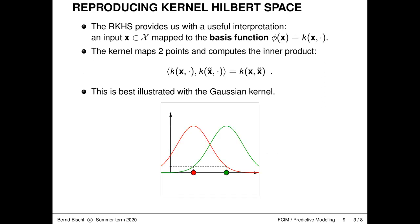The RKHS provides a very useful interpretation: an input x is mapped to a basis function of this form. This is best illustrated with the Gaussian kernel. If you have two one-dimensional points — say a green point and a red point on the real line — the phi mapping takes each single point and maps it to a bump function in Hilbert space. From this you can also see that this Hilbert space is of infinite dimensionality.